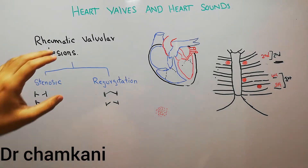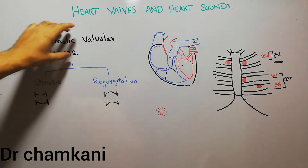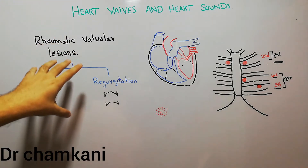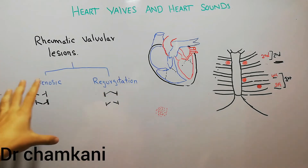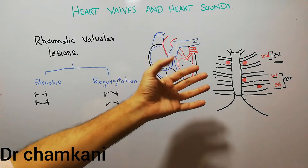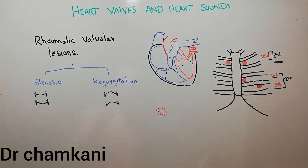There are a lot of conditions which can damage the heart valves, but here we are going to discuss the rheumatic valvular lesion. We will briefly discuss the rheumatic fever and mention the abnormalities it can cause in the heart valves, because rheumatic fever is one of the most common causes of valvular lesions. Apart from that, there are other causes like ischemic heart disease, congenital abnormalities, and calcifications.